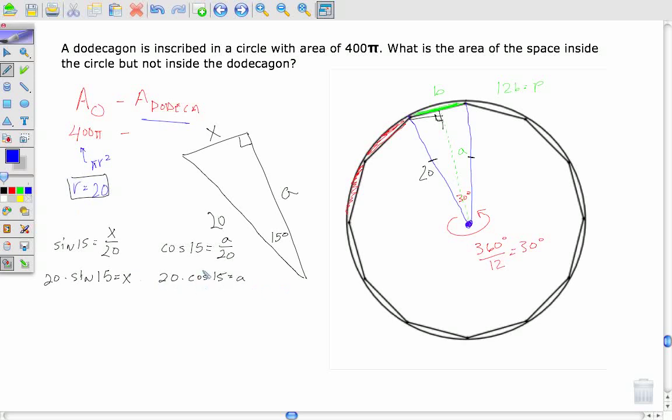So here I know my apothem's length, right there. Here I know half of my base. So let's go ahead and get the full base. Let's multiply it by 2. So I've got 40 times the sine of 15 degrees.